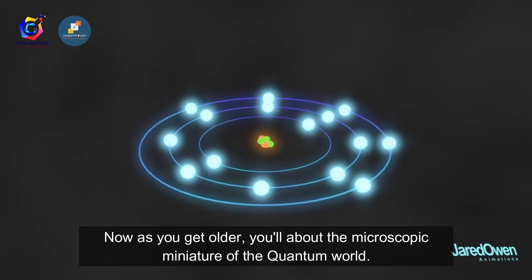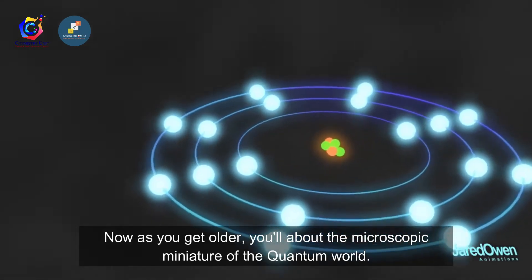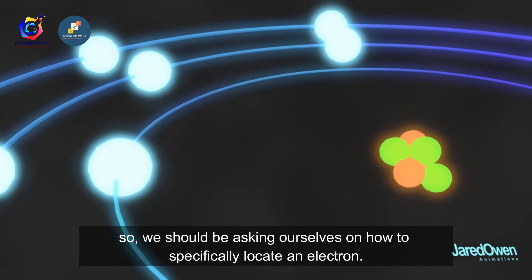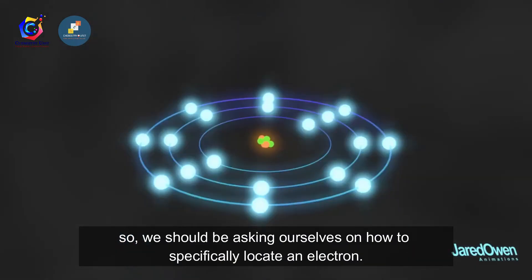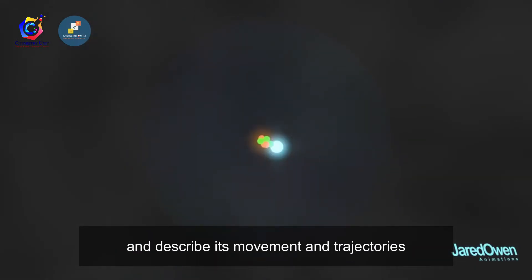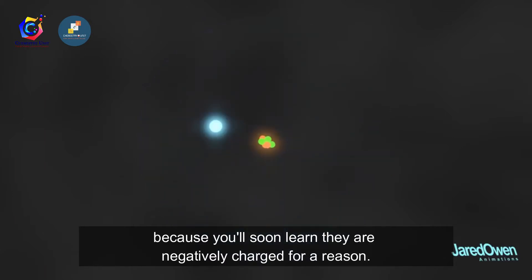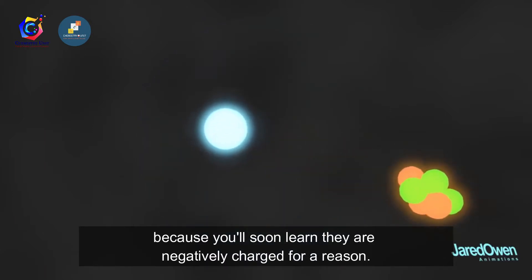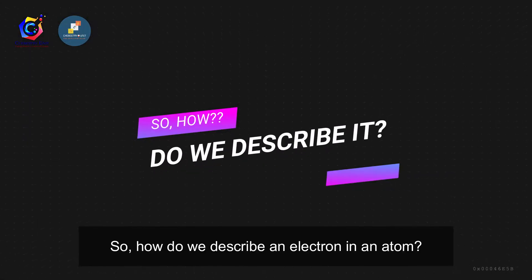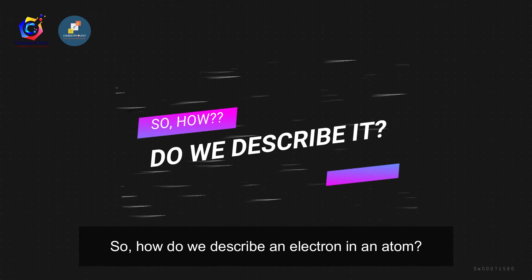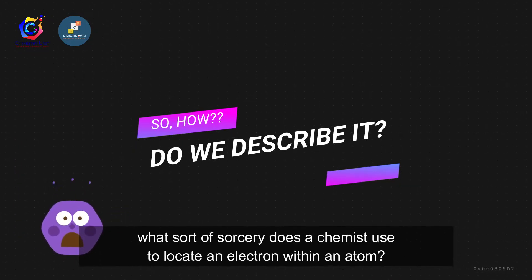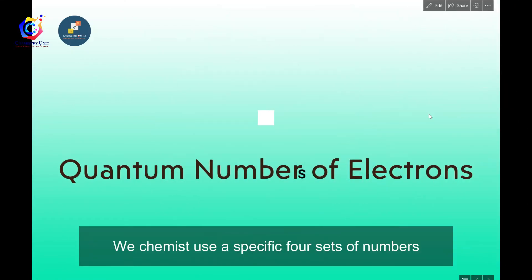This is before quantum chemistry comes into the picture. As you get older, you'll learn about the microscopic world of quantum chemistry. We should be asking how to specifically locate an electron and describe its movement and trajectories within an atom. So how do we describe electrons in an atom? Chemists use specific four sets of numbers.